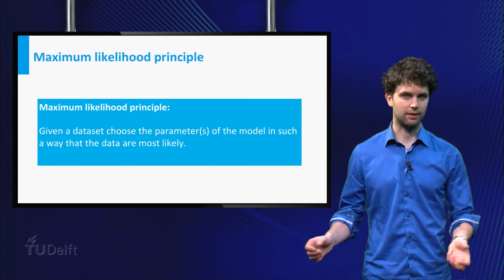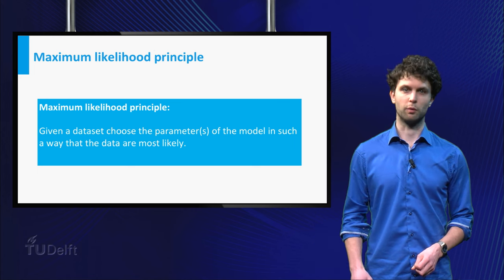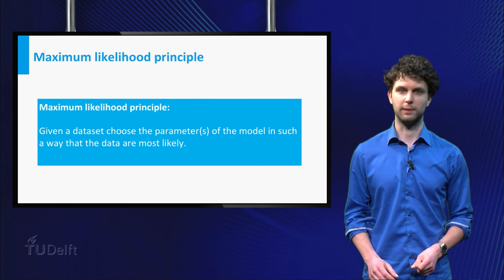Consider the data given. Then, for all possible parameters, compute the probability of observing this data and choose that parameter from which this probability is highest.